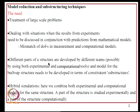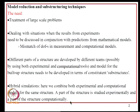Another situation arises when different parts of a structure are developed by different teams, possibly using both experimental and computational tools, and we need to construct the model for built-up structures. This typically happens in space applications and automotive applications, and could also occur in problems of secondary systems in civil engineering. There is also a modern testing strategy known as hybrid simulation, where a part of the structure is studied experimentally and a part computationally, and we couple these two disparate studies to arrive at conclusions on the global behavior of the complete structure.